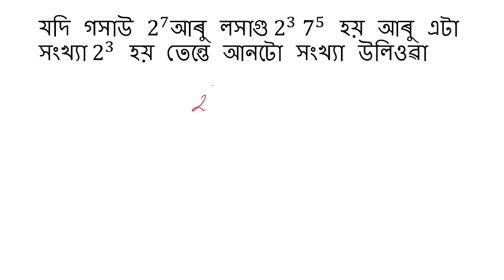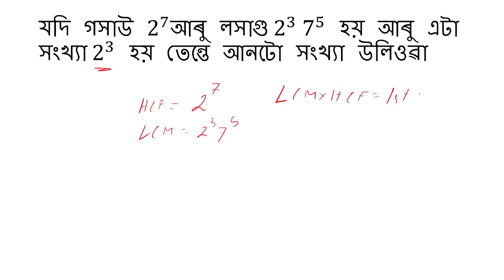2 to the power 7 is given. What is the LCM? It is equal to 2 cubed into 7 to the power 5. LCM into HCF is equal to the first number into the second number. The LCM is equal to 2 to the power 7, and 7 to the power 5.